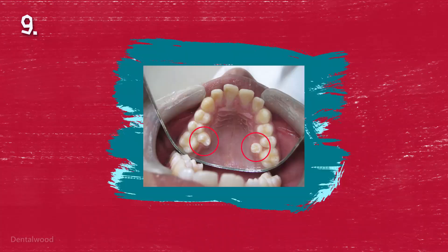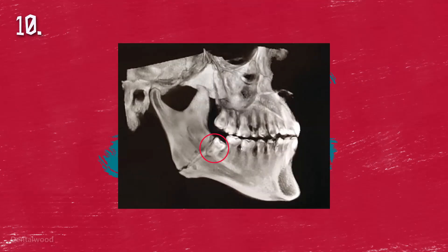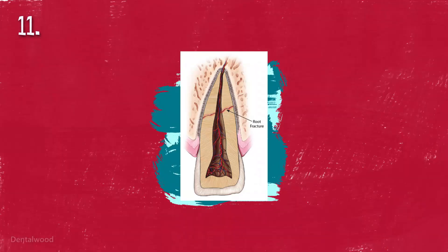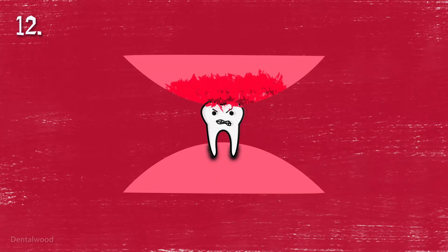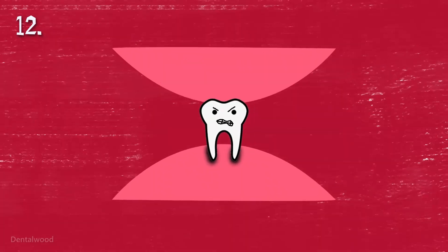Impacted tooth, supernumerary teeth, tooth in the line of fracture, fractured root, teeth that cause trauma to the soft tissues even after trimming and grinding. All these can be removed.